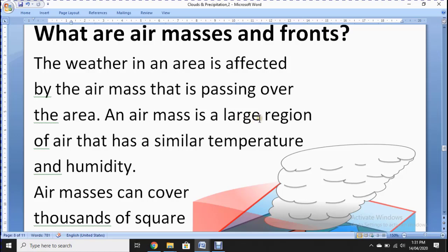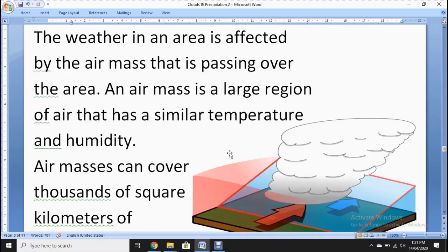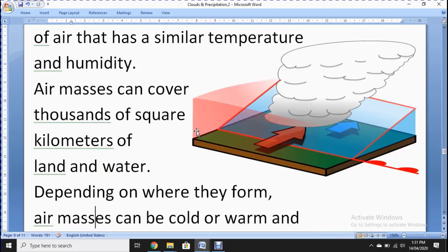An air mass is a large region of air that has a similar temperature and humidity. It contains an amount of water known as humidity and has different ranges of temperature. Air masses can cover thousands of square kilometers of land and water, covering vast regions.